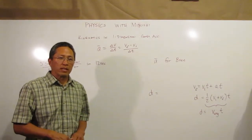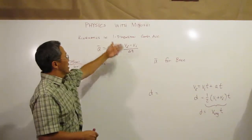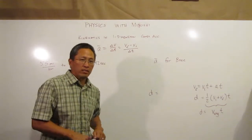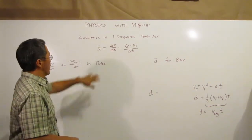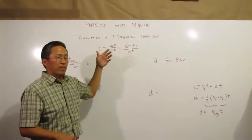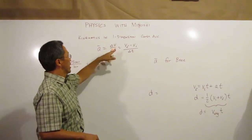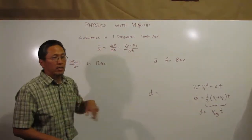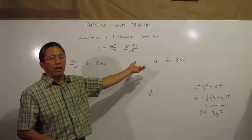Welcome back to Physics with Miyoshi and we're going to talk about kinematics in one dimension with constant acceleration some more. We're going to continue looking at the average acceleration equals the change in velocity over the change in time equation.